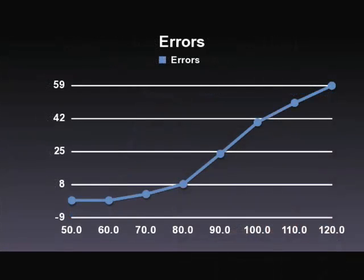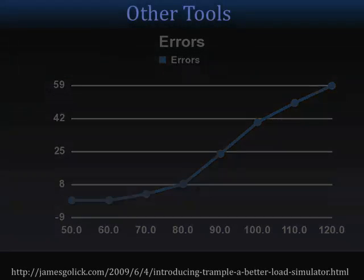In this last graph, you can see the number of errors that popped up per test. It was kept at zero for 50 and 60 requests per second, only a few for 70, but then 80 got more, and 90, 100, and 110 got exponentially larger. So you need to be careful that our server doesn't reach that throughput and start throwing errors to users.